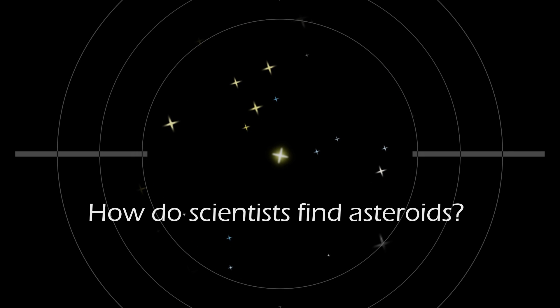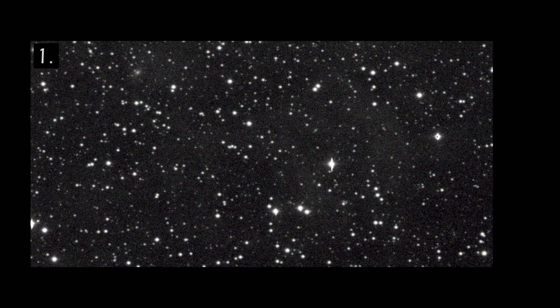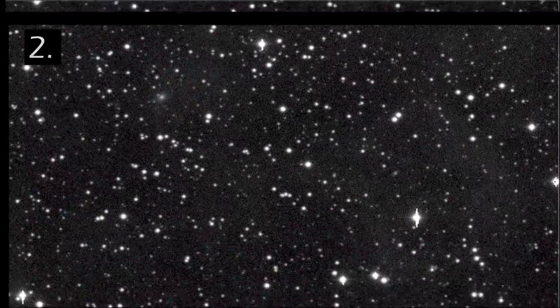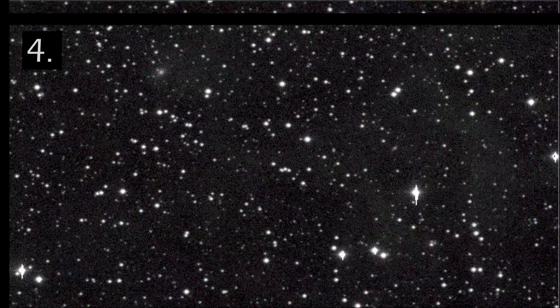Well then, how do scientists find asteroids? They compare a series of telescope images to see if anything in the picture moved relative to the others. If it does, then it might be an asteroid.